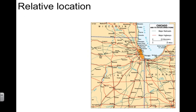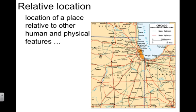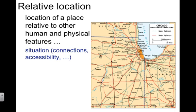The other type of location you need to know is relative location, which is the location of a place relative to other human and physical features — synonymous with the term 'situation.' So we talked about site with absolute location; now we talk about situation with relative location.